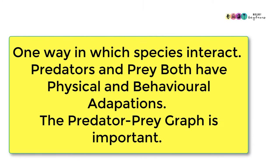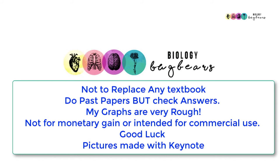Remember that predation is one way in which population numbers are controlled and one way in which different species interact. Also remember that predators and prey both have their own physical and behavioural adaptations that make them better suited for their own survival. And bear in mind that the predator-prey graphs are very important and can be tricky. Best of luck with all of the revision.